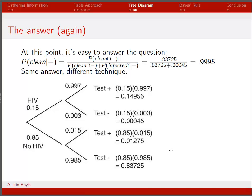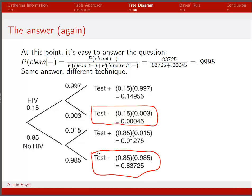Now it's easy to answer: what's the probability of being clean given a negative test result? People with negative test results come from two branches: those who are clean and negative, and those who are infected with a false negative. Of those, only the clean people are truly free of HIV. So we take 0.83725 — the clean-and-negative intersection — and divide by the total probability of a negative test, giving 0.9995, the same answer as before.